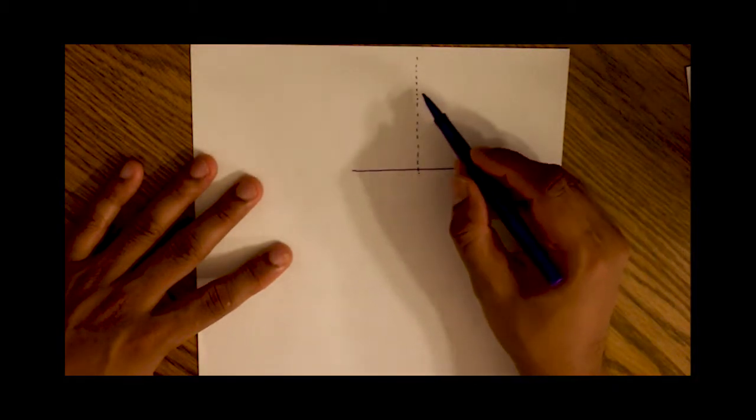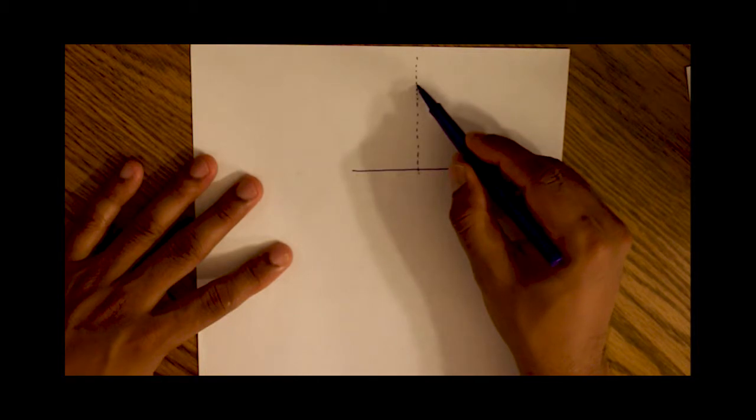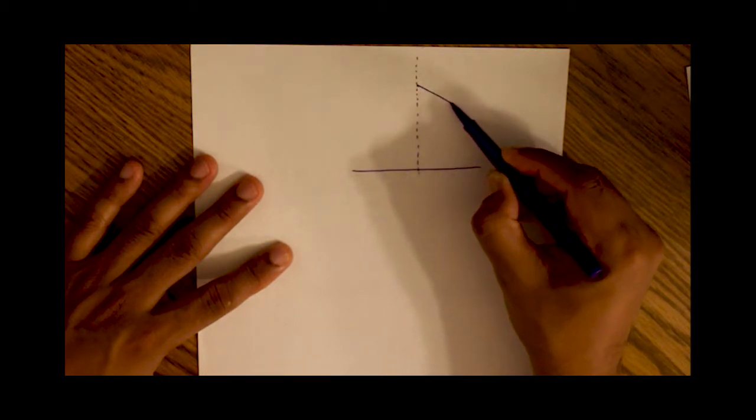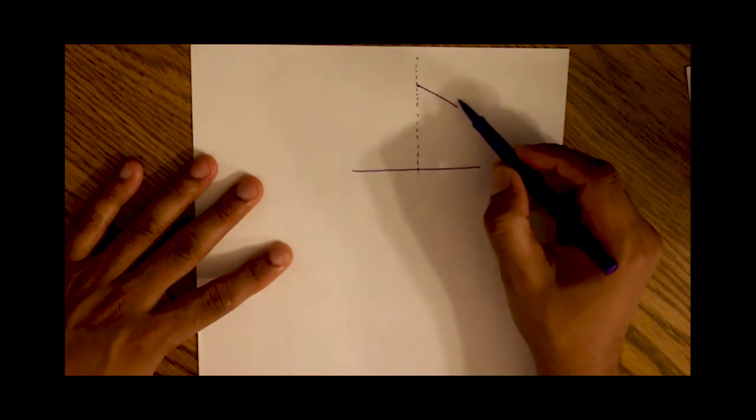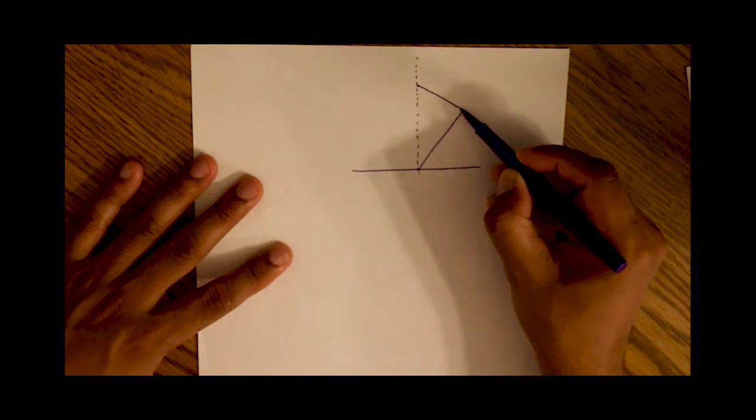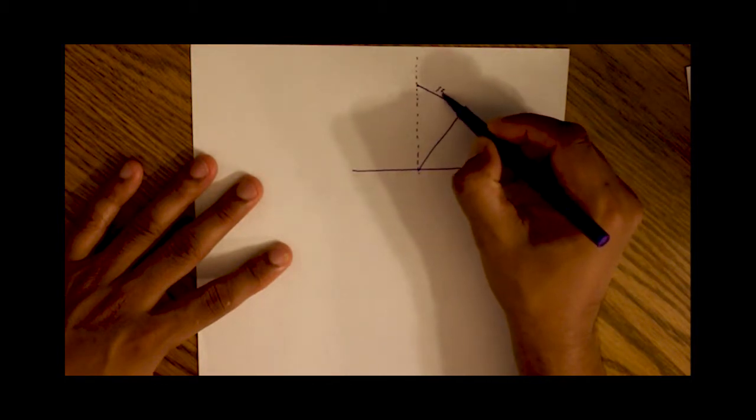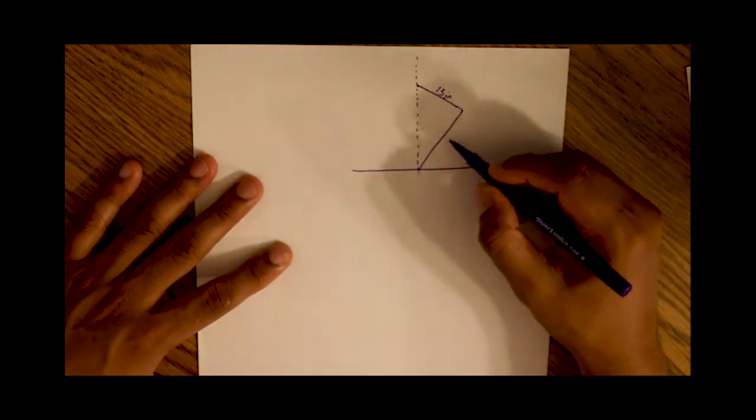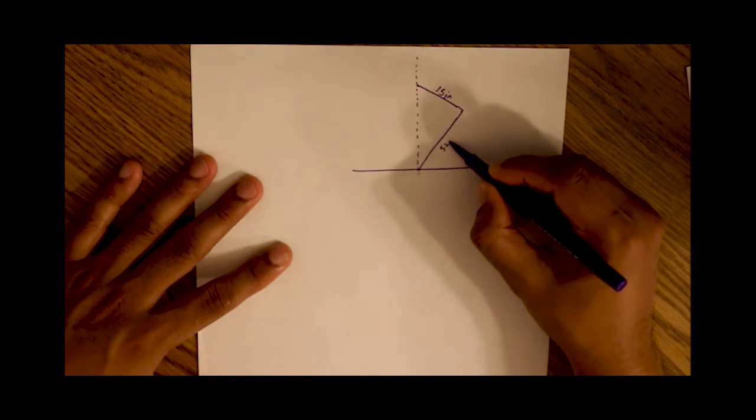Now let's draw our filing cabinet. So the filing cabinet is being tilted at some angle. This is the width of the filing cabinet and this is the height of the filing cabinet. The width is given to us as 15 inches and the height is given to us as 52 inches.